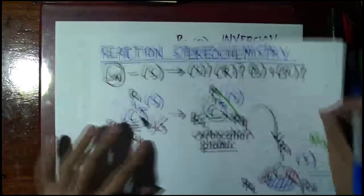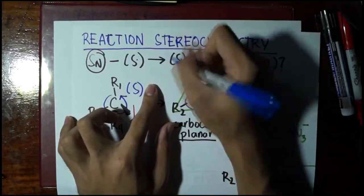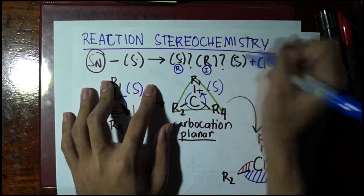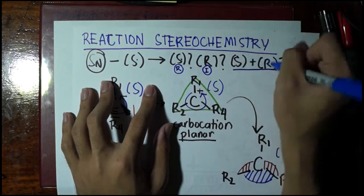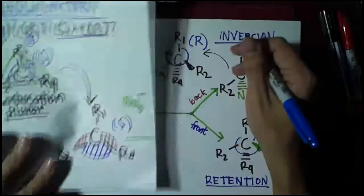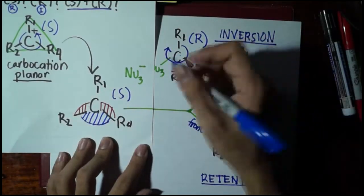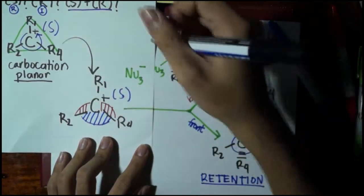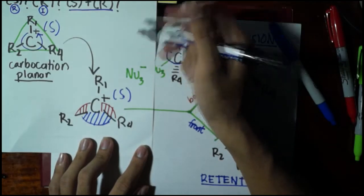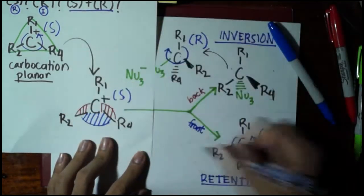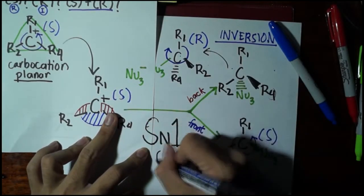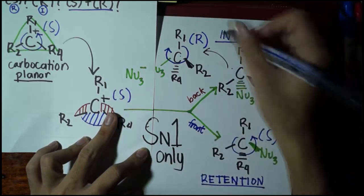So if we go back to the question, S to S, this is retention and S to R this is inversion. Now, I actually gave out this kind of question because this actually happens. Remember, in SN1, only SN1 will give this carbocation. In SN2, the carbocation really does not exist. So meaning, this is the case only if we have an SN1, wherein we have a mixture of inversion and retention.